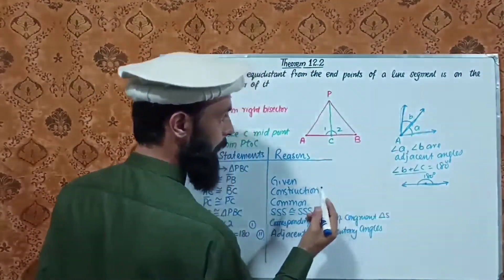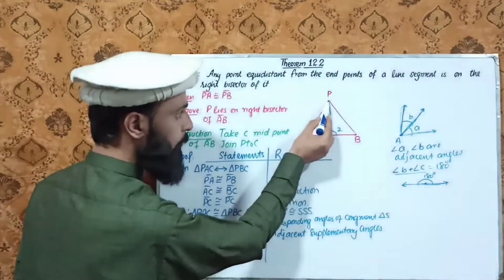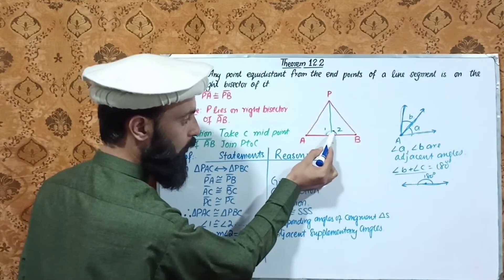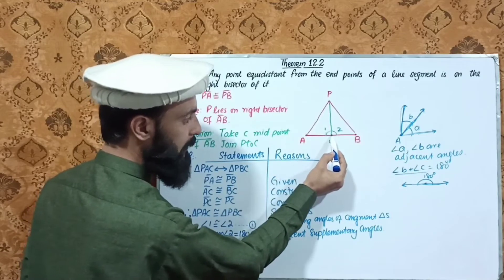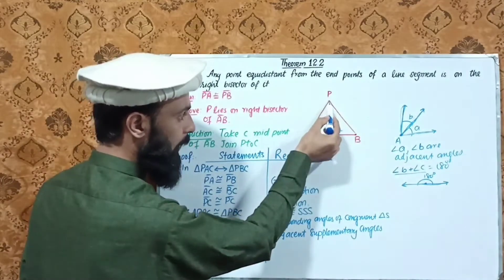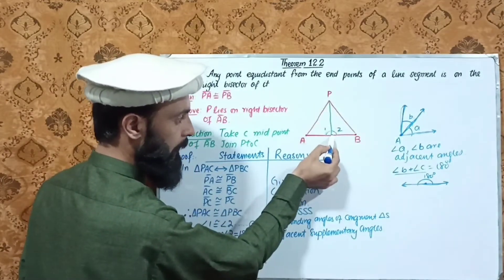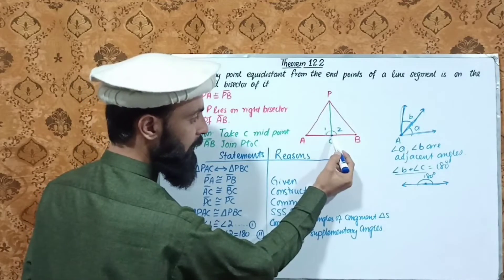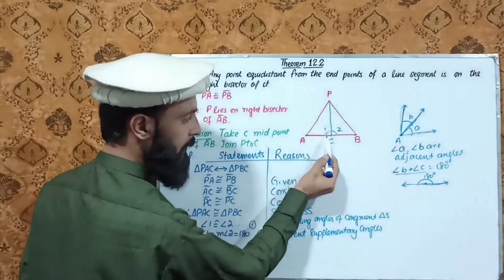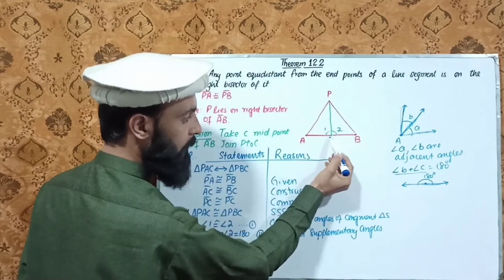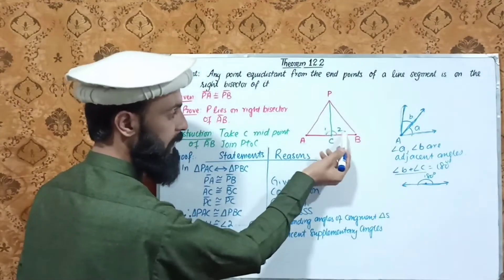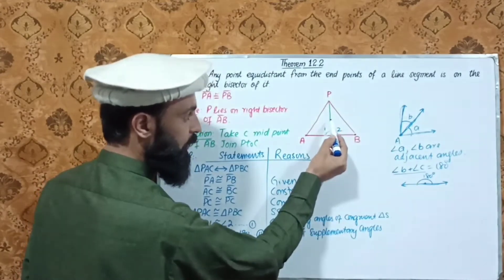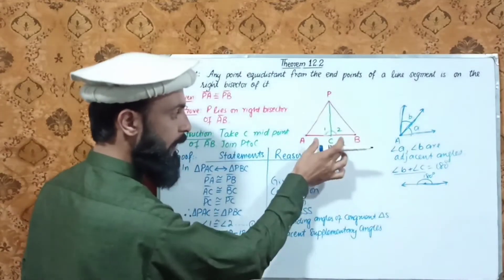Angle PCA is angle 1 and angle PCB is angle 2. They have vertex C, with common arm PC and non-common arms CA and CB. These are adjacent supplementary angles forming a straight line along AB.